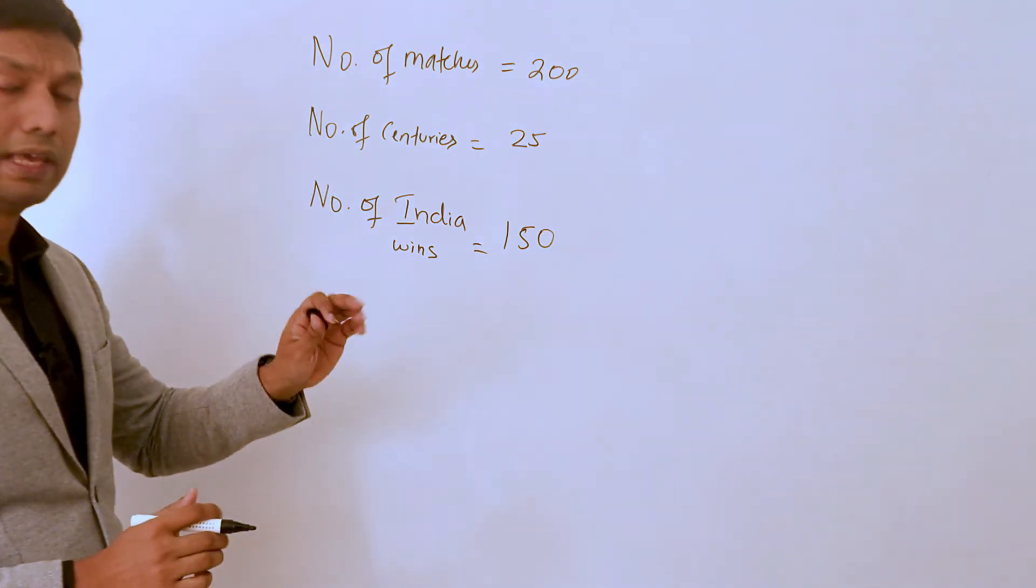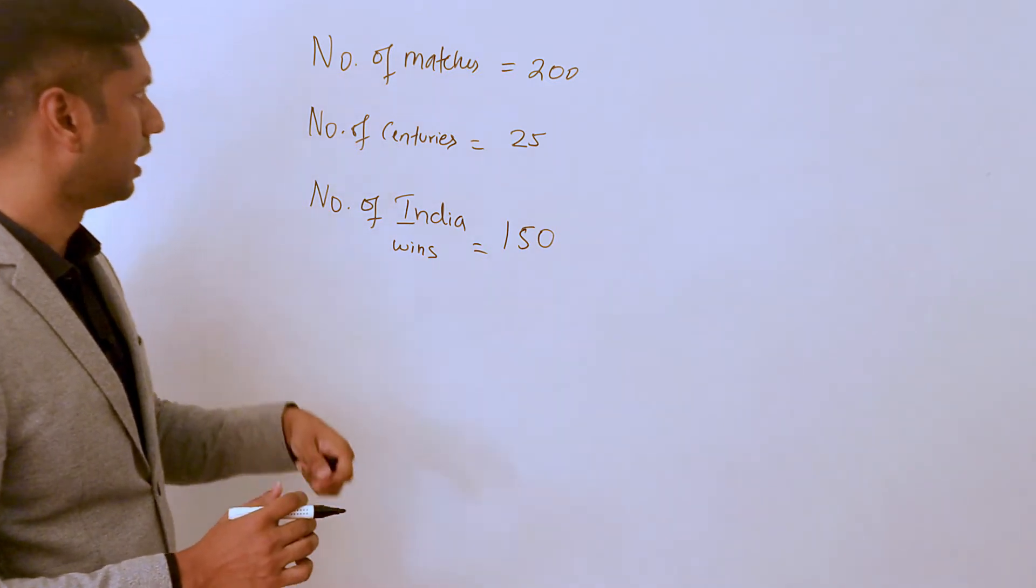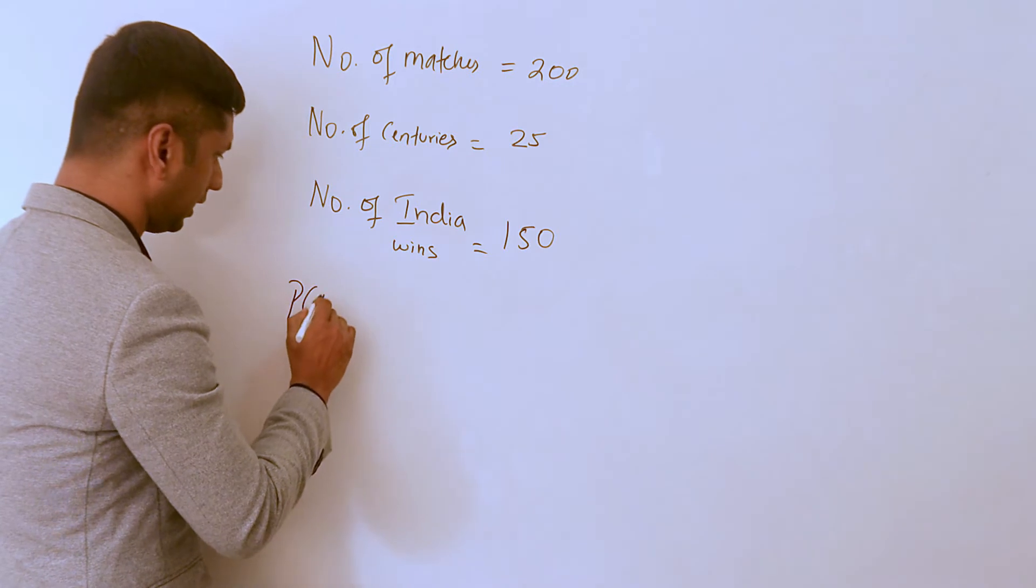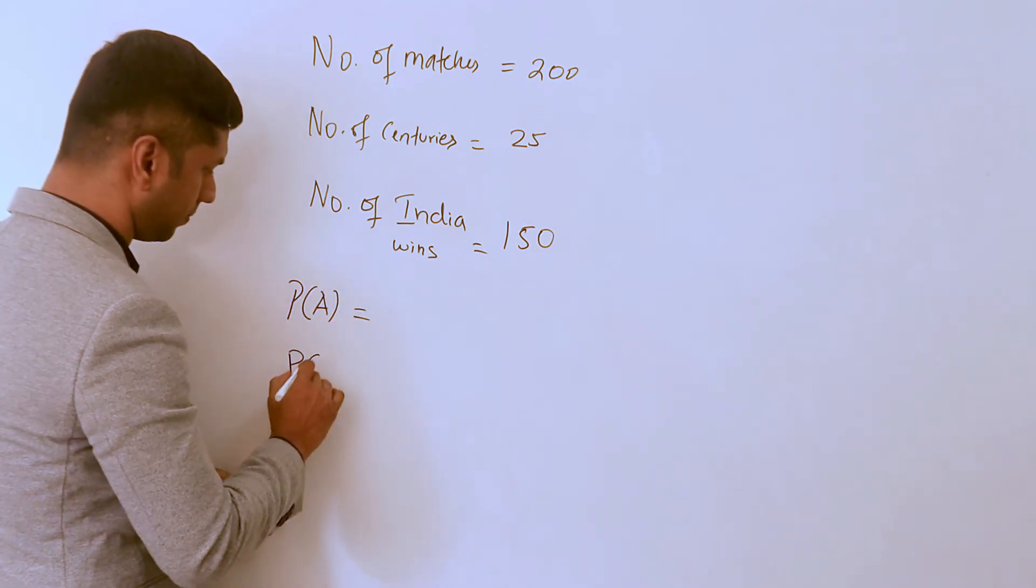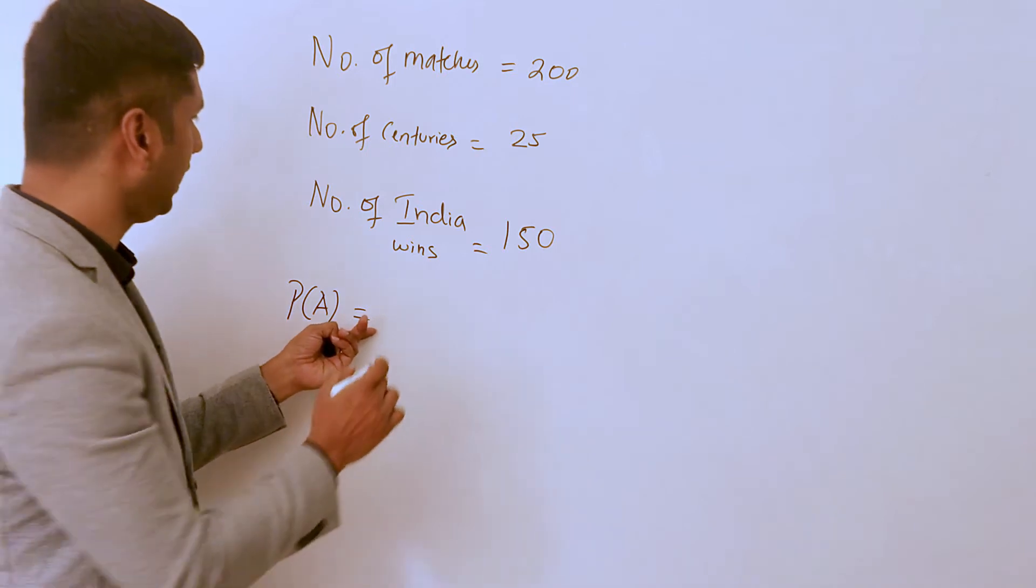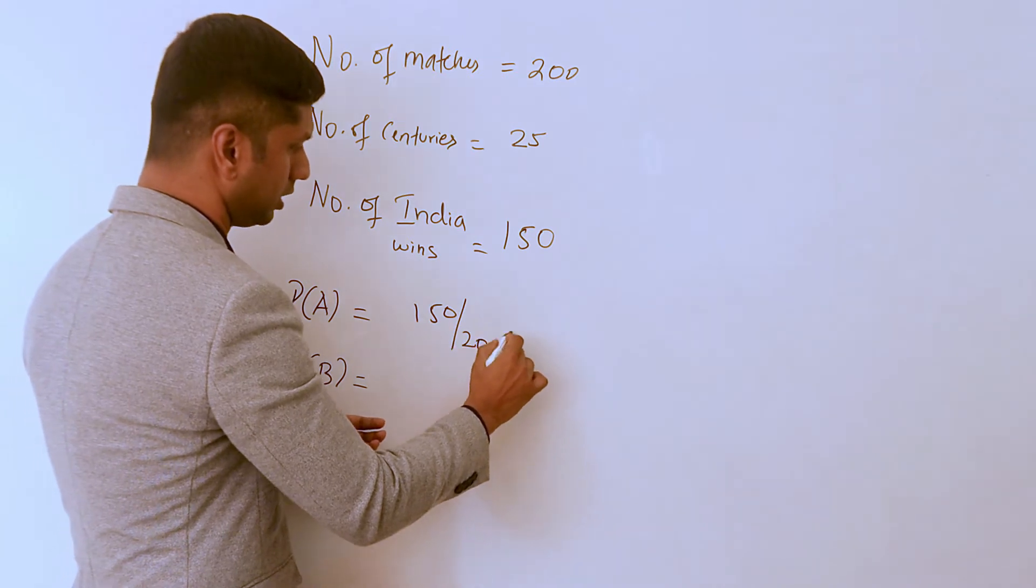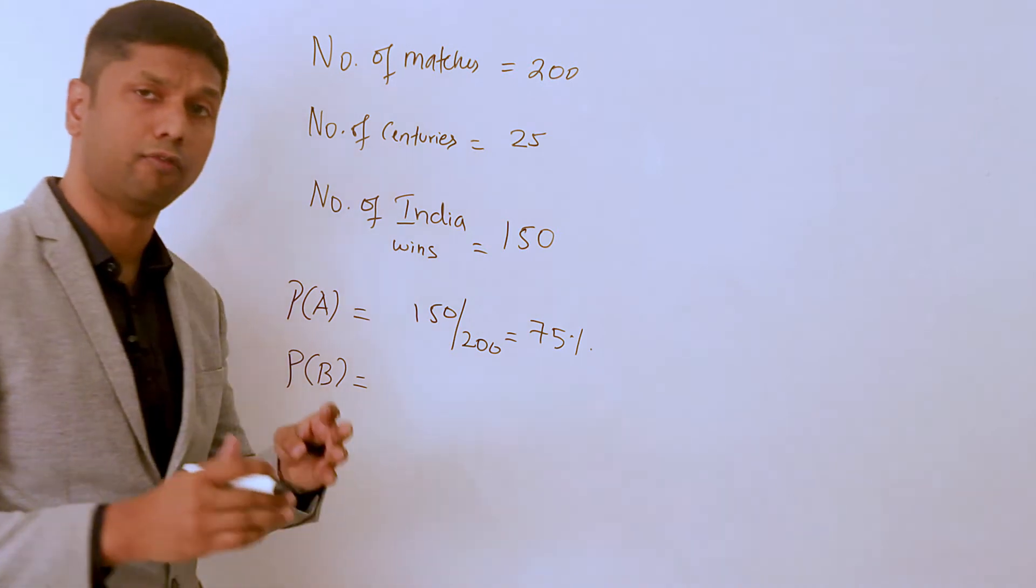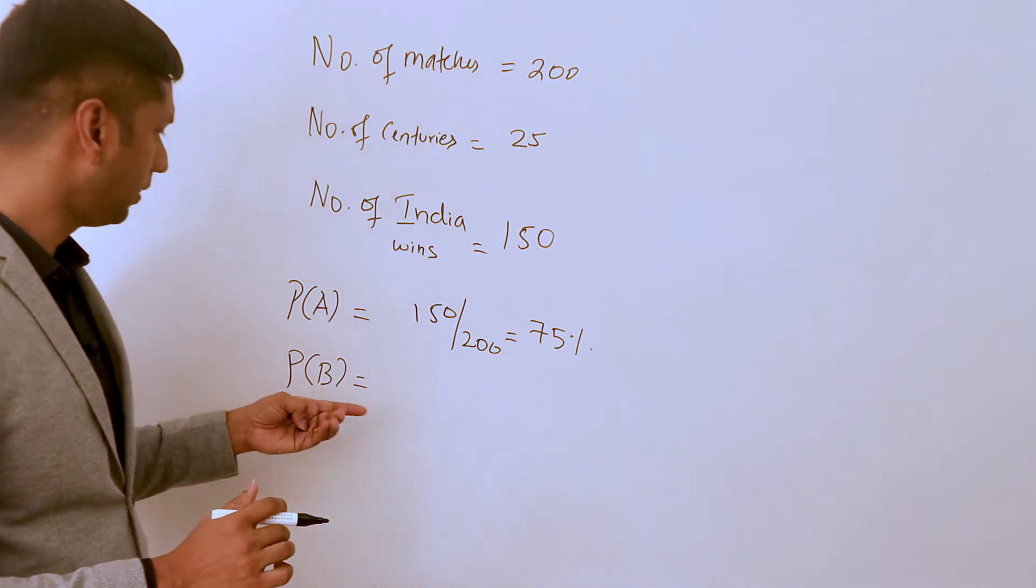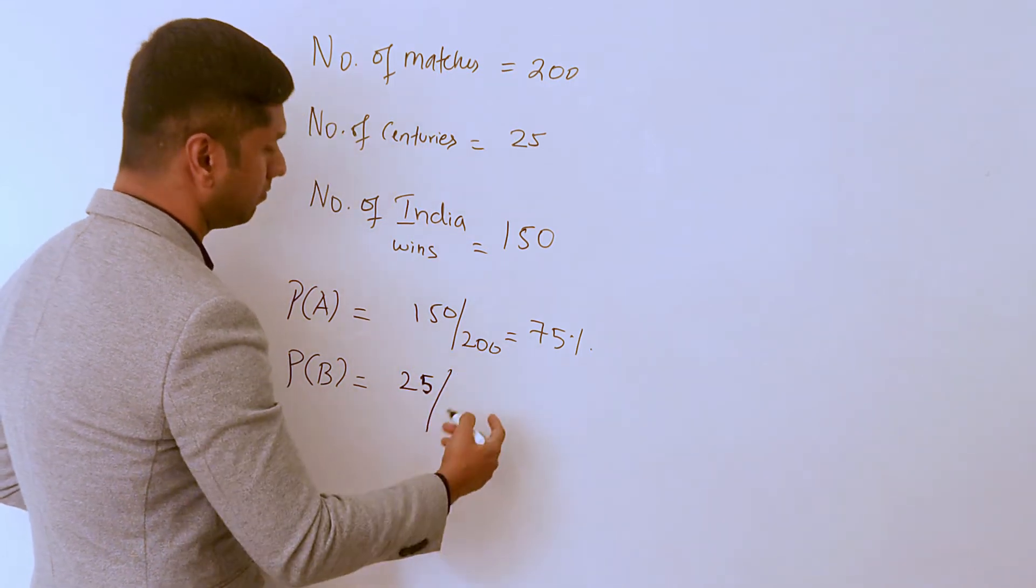Now, if we say the probability of India winning is A and probability of Rohit scoring a century is B, let's look at that. Probability of A is 150 over 200, so that's 75% - India has won 75% of the matches Rohit played. The probability of him scoring a century is 25 over 200, which is around 12.5%.